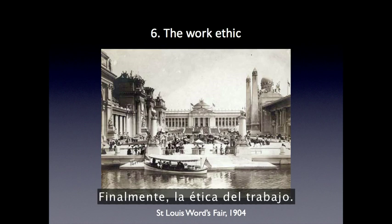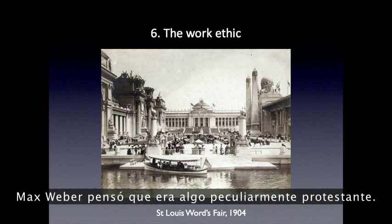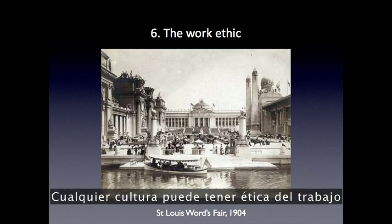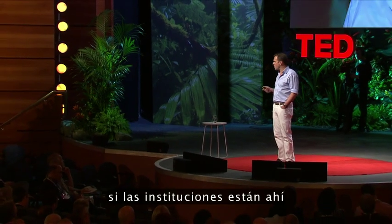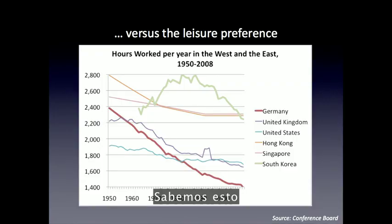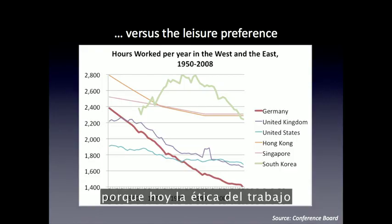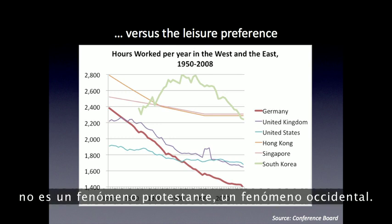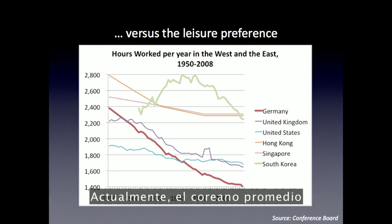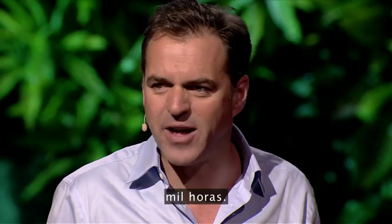Finally, the work ethic. Max Weber thought that was peculiarly Protestant. He was wrong. Any culture can get the work ethic if the institutions are there to create the incentive to work. We know this because today the work ethic is no longer a Protestant Western phenomenon. In fact, the West has lost its work ethic. Today the average Korean works 1,000 hours more a year than the average German. One thousand.